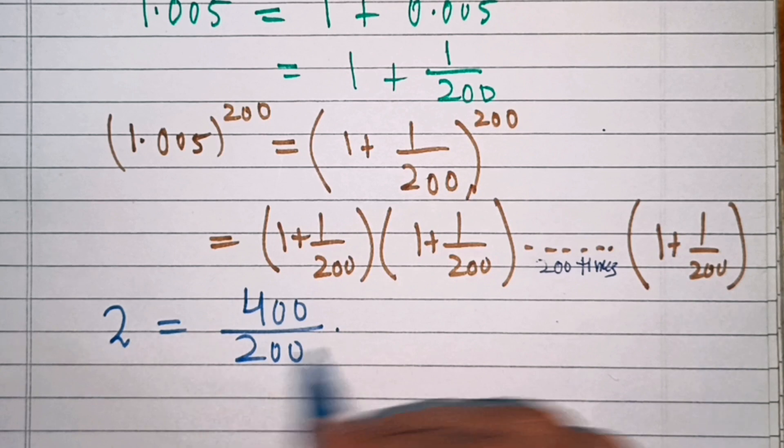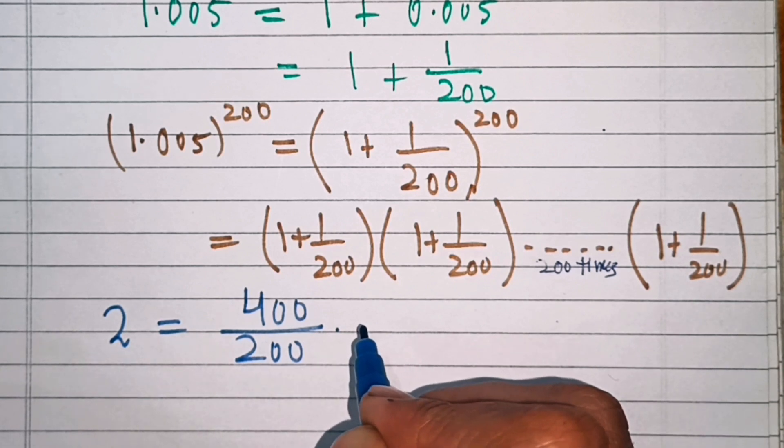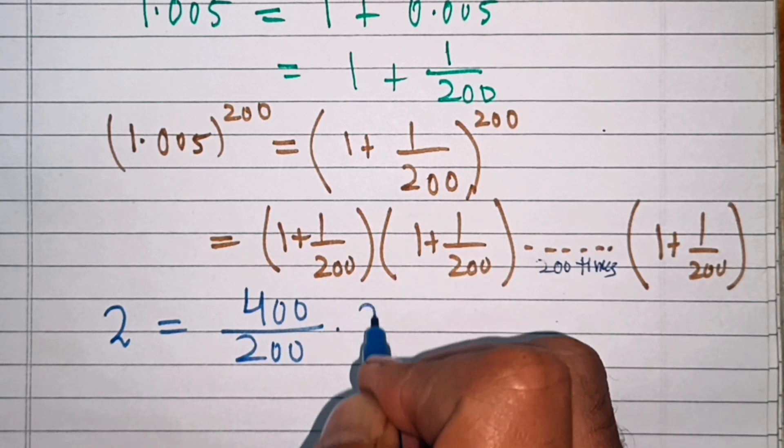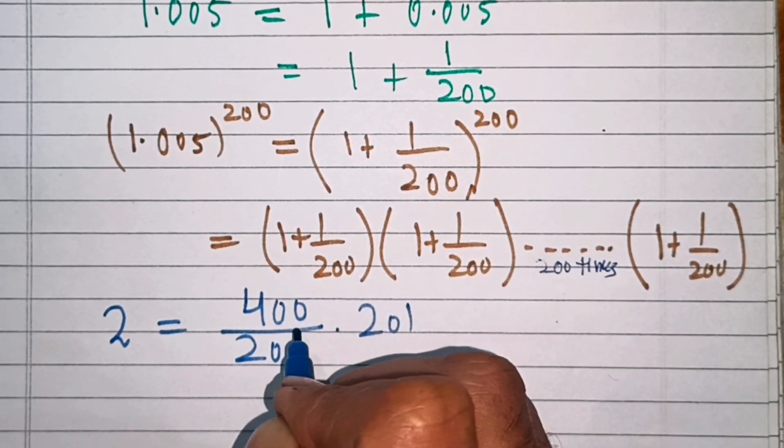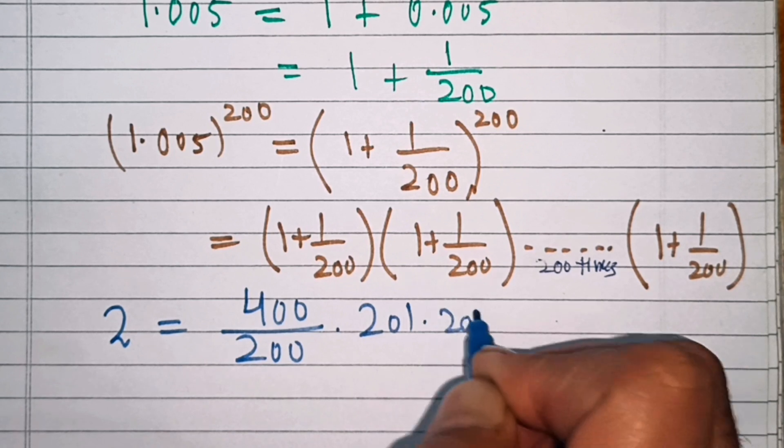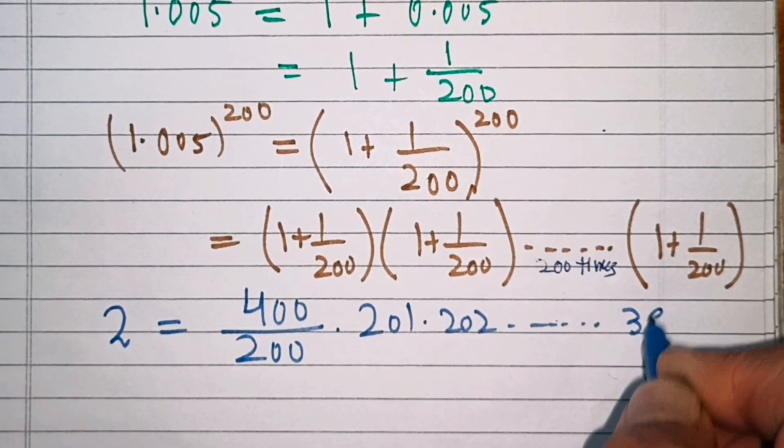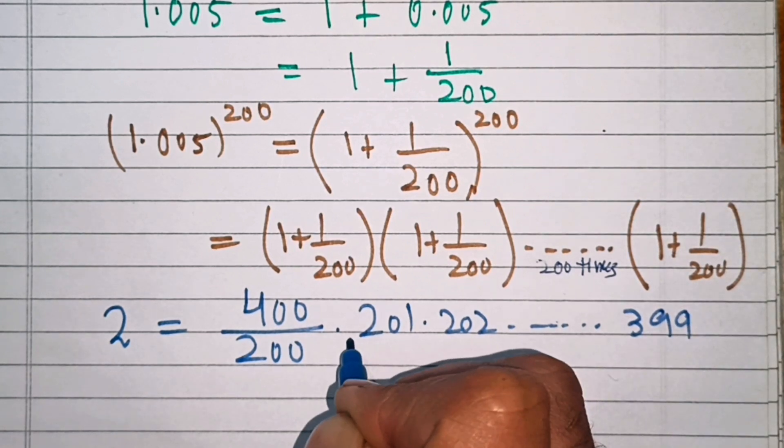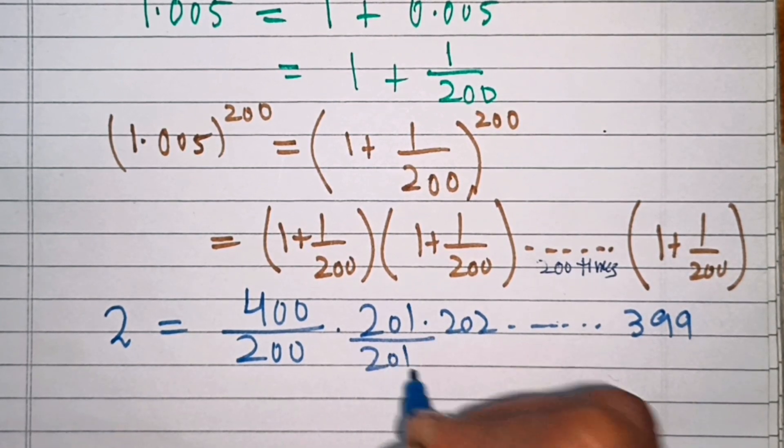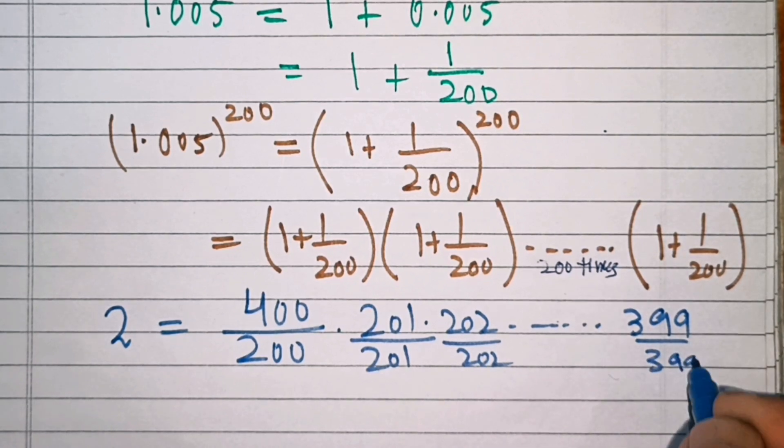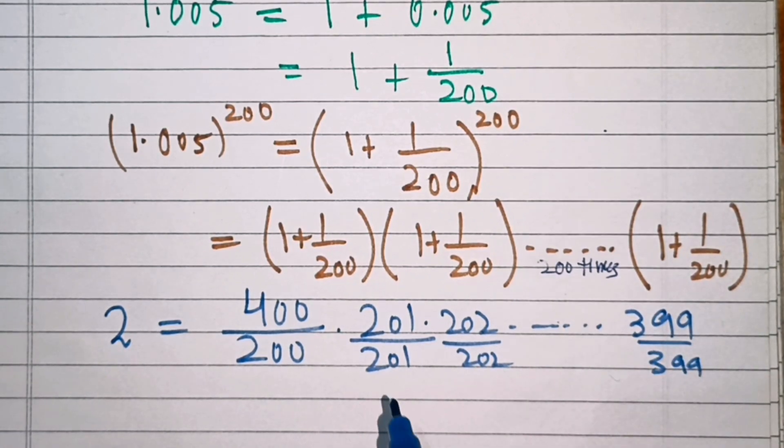Now we will write here all the numbers which are between 200 and 400. That is we will write here 201, 202 up to 399. And also we will divide by the same numbers: 201, 202, 399. These numbers will not make any difference to this number because these are all equivalent to 1.